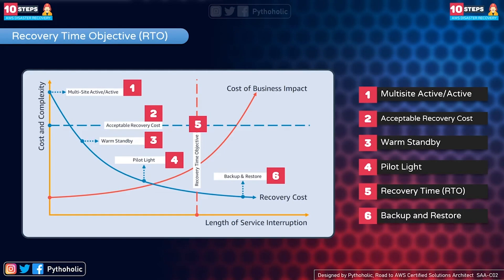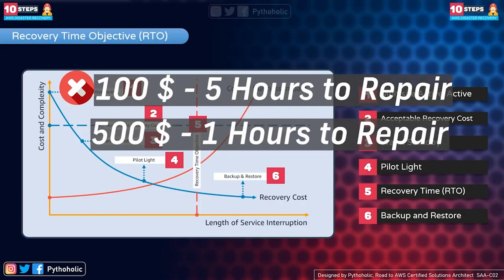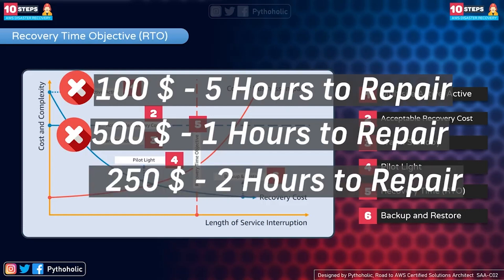Suppose I give you a broken device and ask you to repair it. You say it will cost $100 and take five hours. I want it faster, so I visit another shop — they charge $500 but repair it in one hour. That's great for time, but I can't afford $500. A third shop charges $250 and takes two hours, which sounds reasonable based on time and cost.